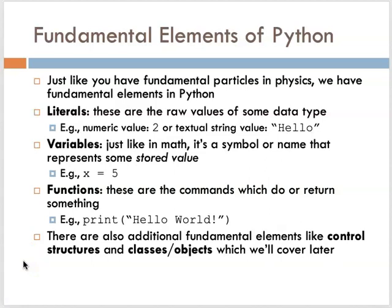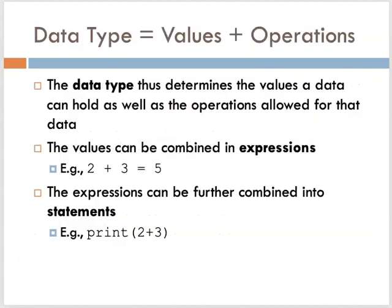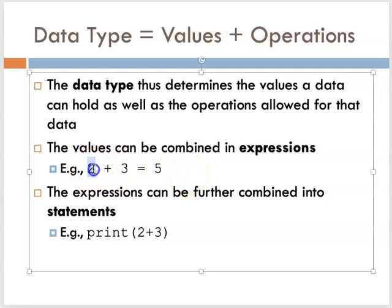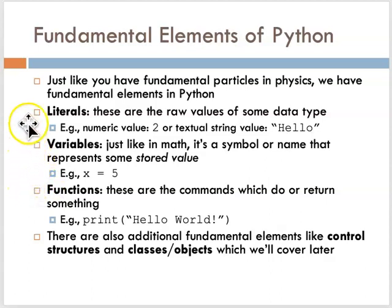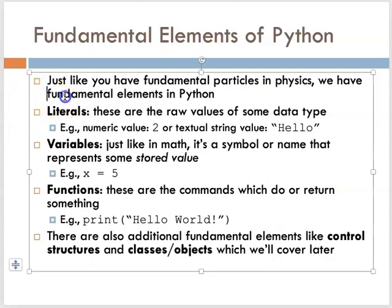As you start to think about the kinds of things that exist in a programming language, we might draw an analogy to the fundamental particles in physics. Just like the physical world is made up of these fundamental particles which you can combine in different ways, we saw these different components of a programming world — combining things like values, carrying out operations, and statements. We might say that there are certain fundamental elements in a language like Python.